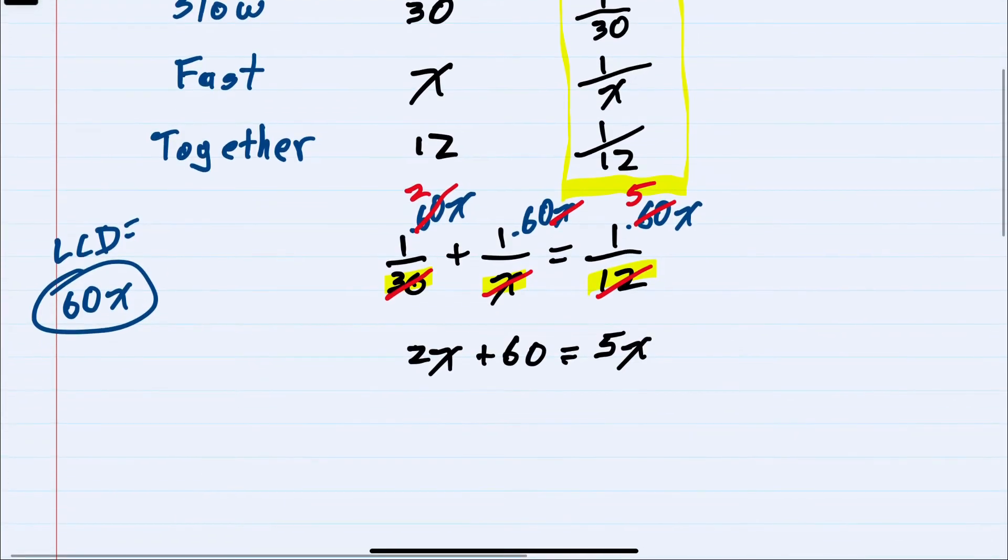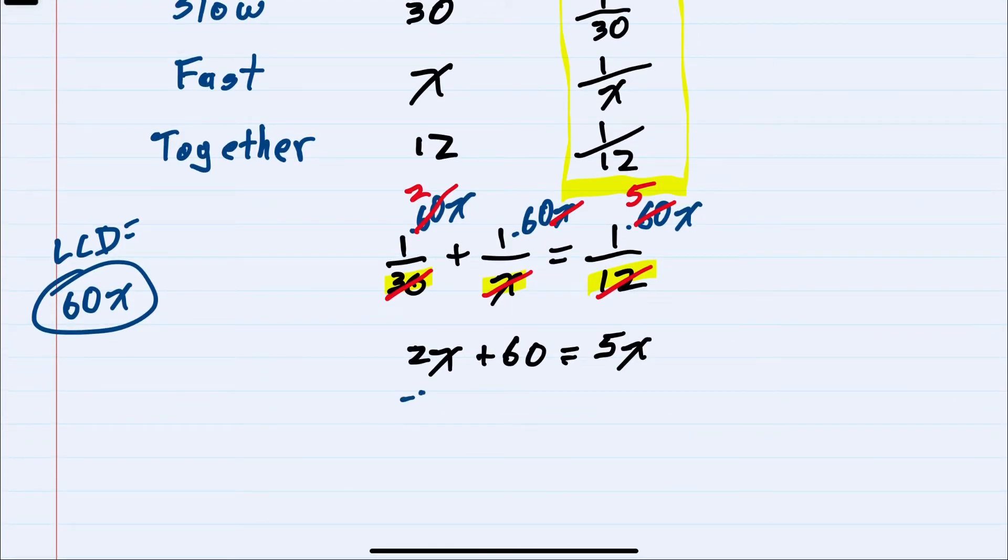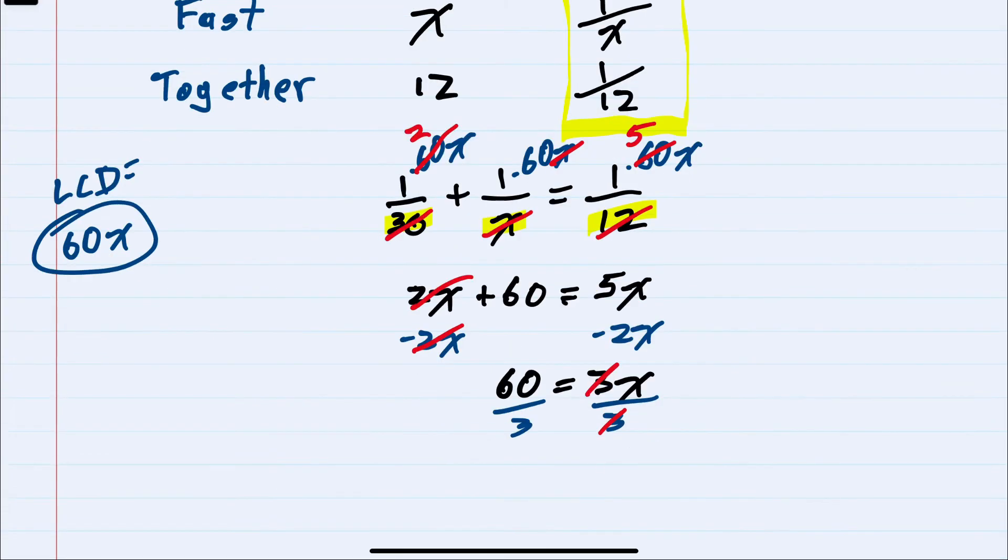We can now solve for x by gathering the x terms on one side. I'll subtract the 2x over, giving me 60 equals 3x on the right. And then solve for x by dividing by 3. I'll have x equals 20.